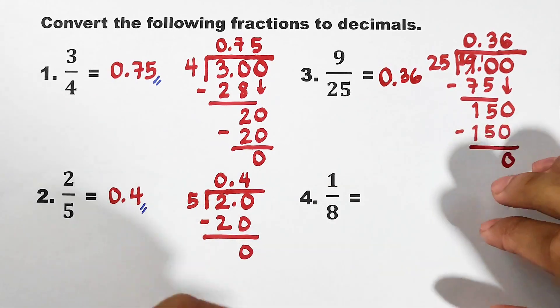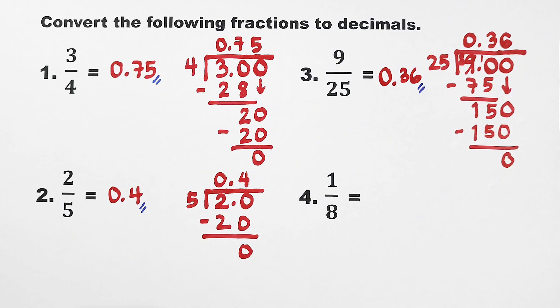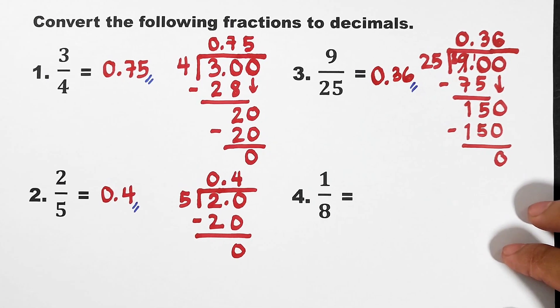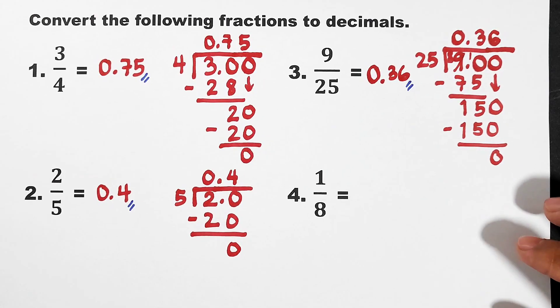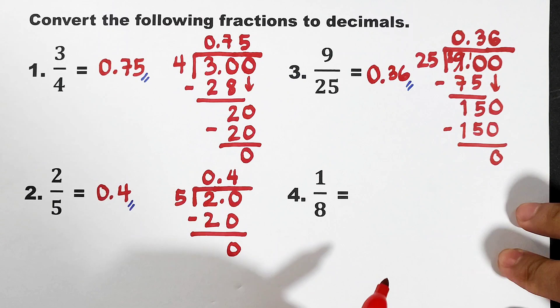So, we are done with number 3. And I hope you are doing well with our examples. Now, let's move on with item number 4. What we have now is 1 over 8. So, for 1 over 8, it will give you an idea that this one is quite difficult. But, let's try.